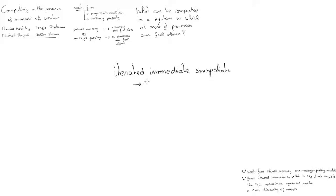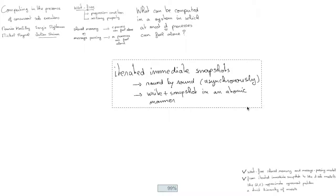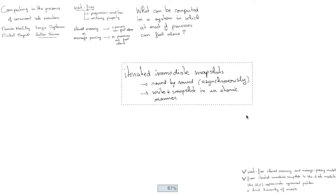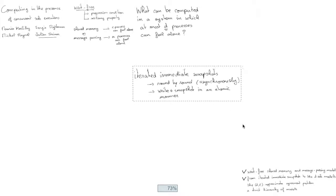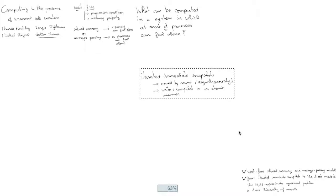In that model, processes communicate through an object that is associated to the round. They execute the round asynchronously, and communicating through the object is done in an atomic manner through an operation called write snapshot. During that operation, the process instantaneously writes and takes a snapshot of the whole memory. Here, atomic has a special meaning. It's not linearizability as we are used to use it, but it's set linearizability, which means that processes can execute the write snapshot at the same time, in which case they see each other and have exactly the same view of the memory in their snapshot.